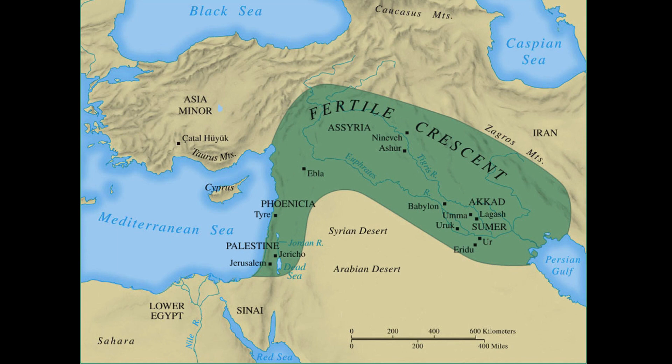Permanent villages of up to a few thousand people replaced nomadic bands. Pottery was made from clay, and goods were accumulated and traded. A division of labor appeared, and eventually men became the dominant gender because of their labor and food production. Increasing complexity led to the further development of what is called civilization.